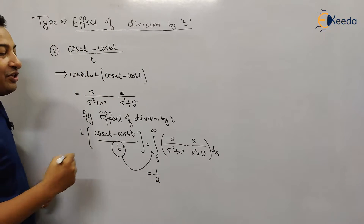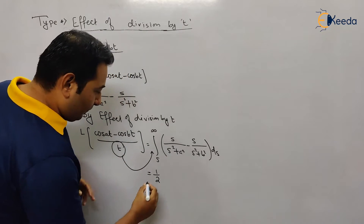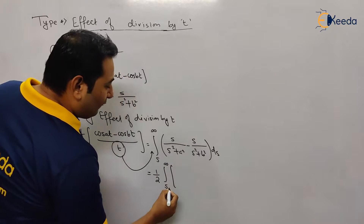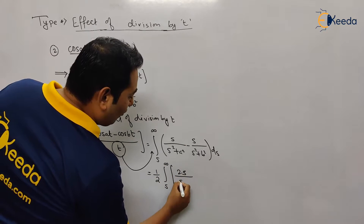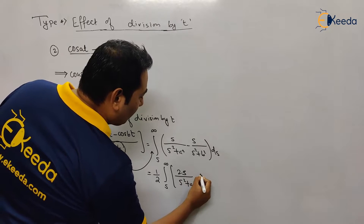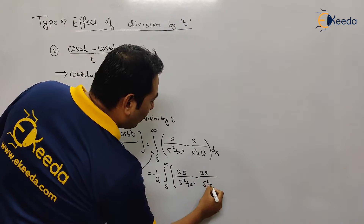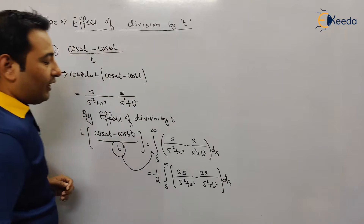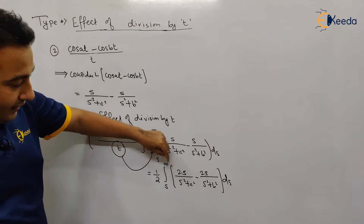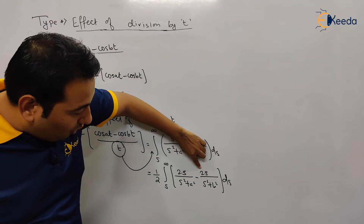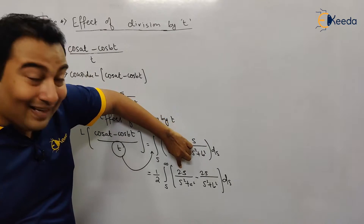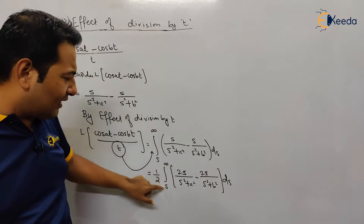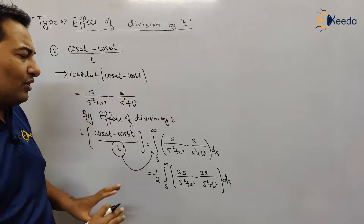The problem with formula five is that it requires 2s, not just s. So we need to convert s into 2s. The adjustment is simple: multiply and divide by 2, giving a factor of one-half outside. The integral from s to infinity becomes ½ ∫[s to ∞] [2s/(s²+a²) - 2s/(s²+b²)] ds. Taking 2 common cancels with the half, so it's straightforward.